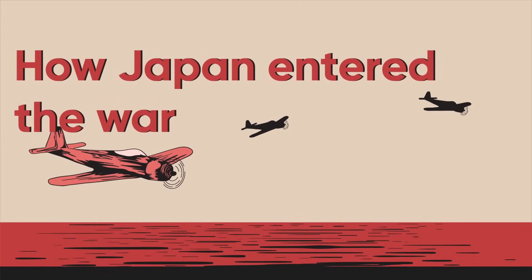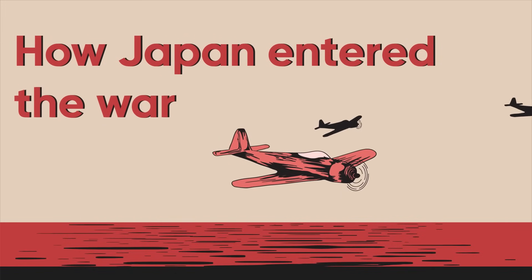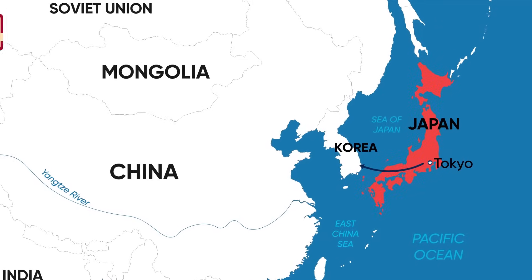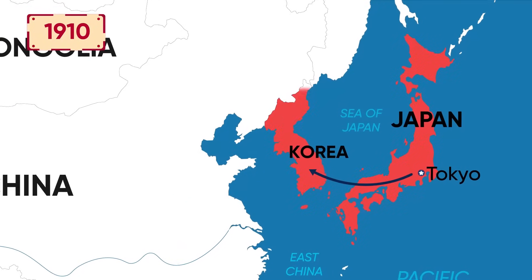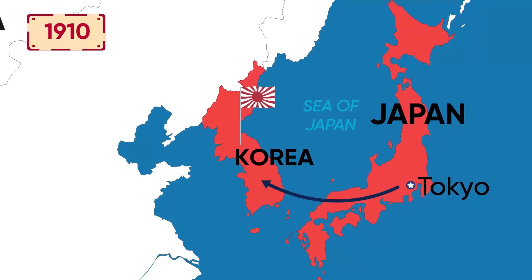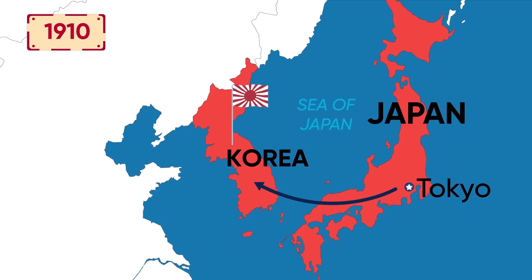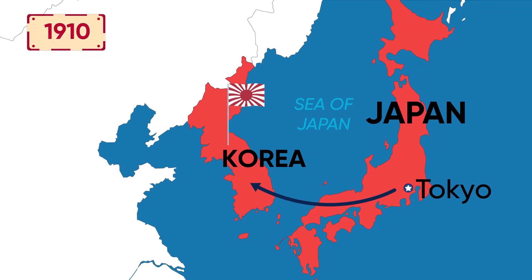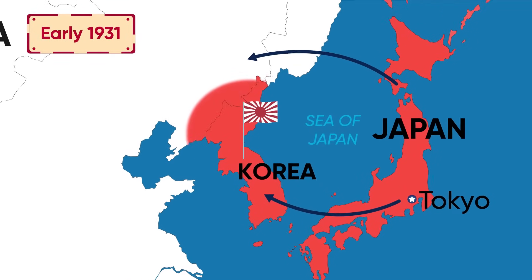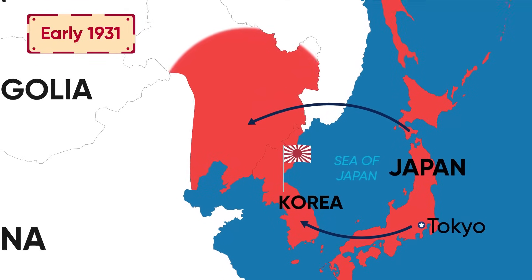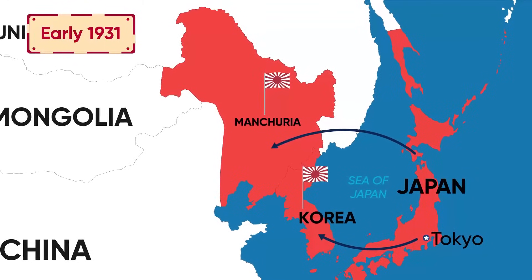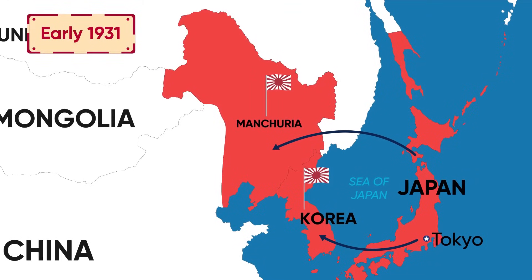How did Japan enter the war? After annexing Korea in 1910, Japan continued its expansionism to achieve economic security and solve its demographic problems. As early as 1931, the Empire of Japan invaded Manchuria, a small, resource-rich province in northern China.